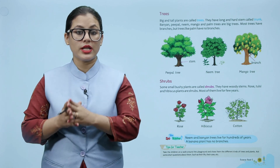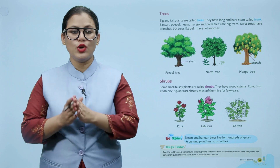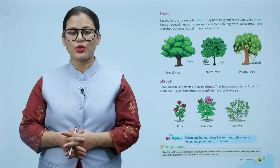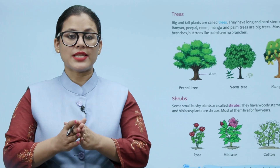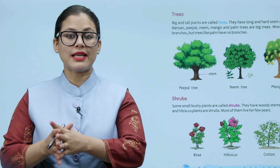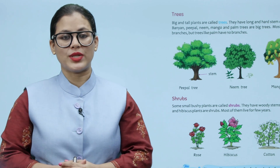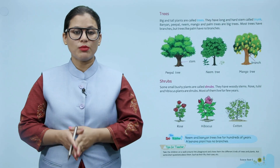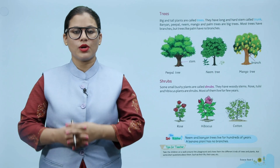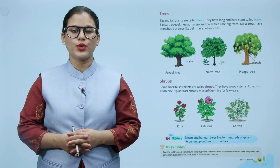Big aur tall plants ko kaha jaata hai trees. Inki long aur hard stem hoti hai jise kahte hain trunk. Aapke kuch examples hain jaise banyan, peepal — ye sare trees hain. Shrubs: Some small bushy plants are called shrubs.